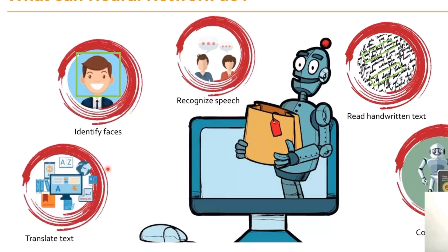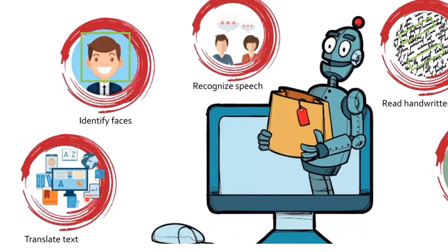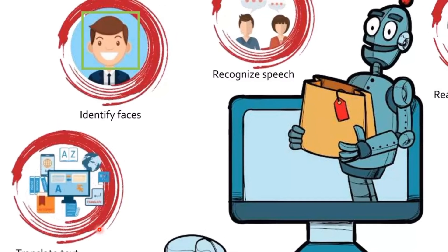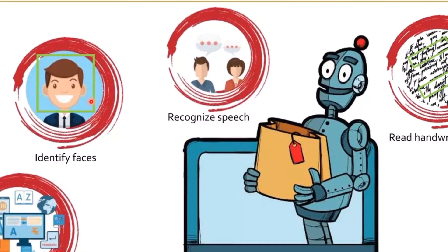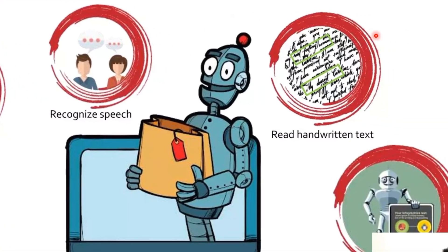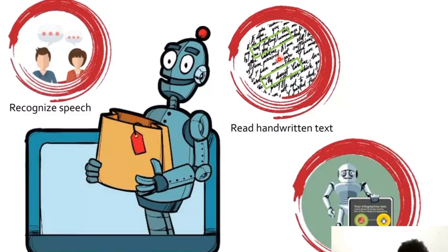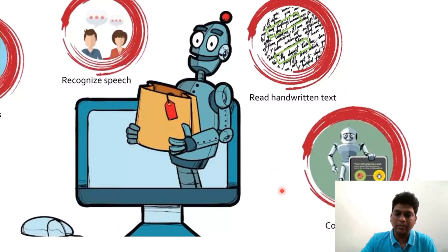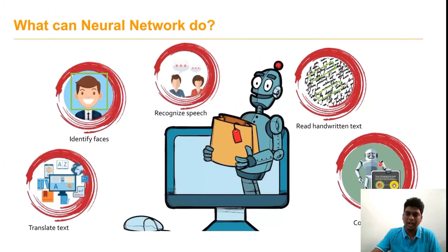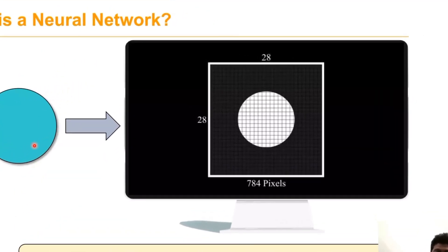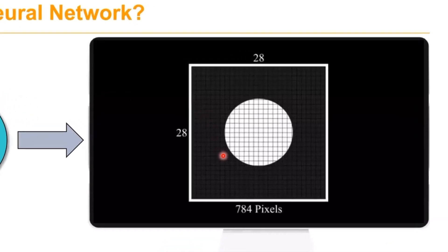These are the main applications that a neural network can perform: it translates various text formats, identifies various biometric traits, recognizes various types of speech, reads various types of handwritten text, helps with robotic applications, and can identify unlabeled images without human intervention.